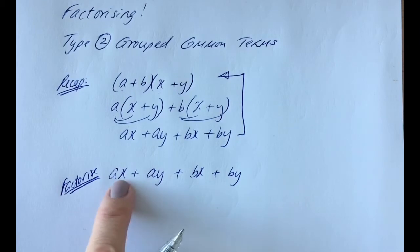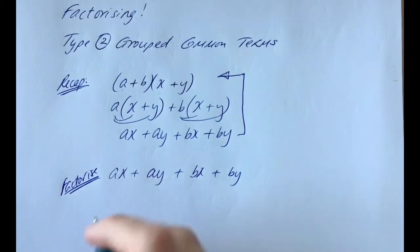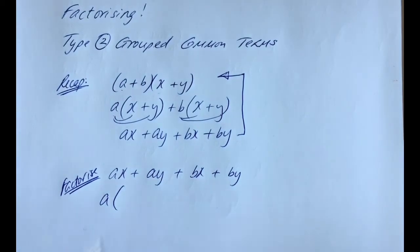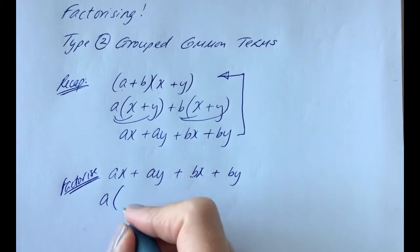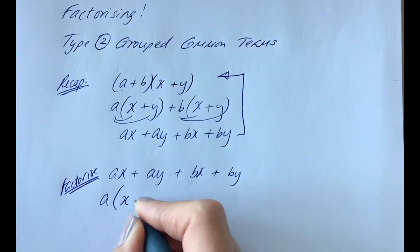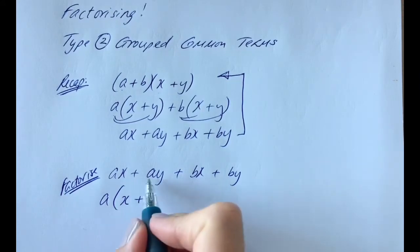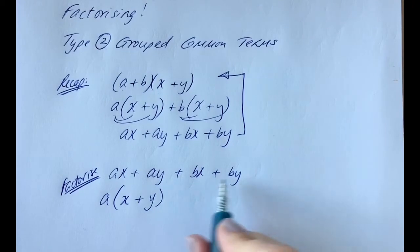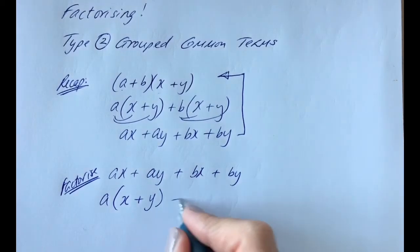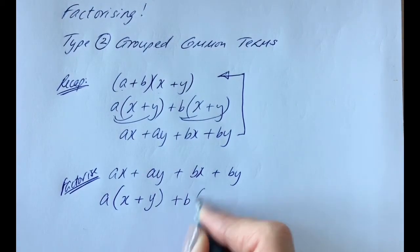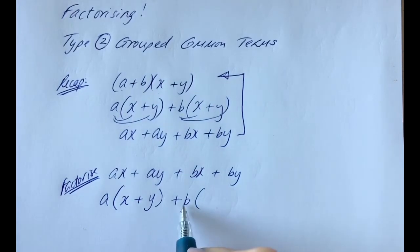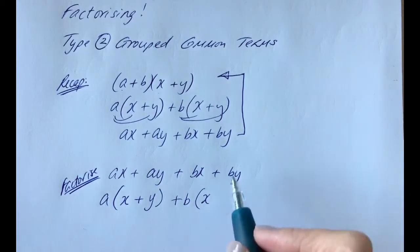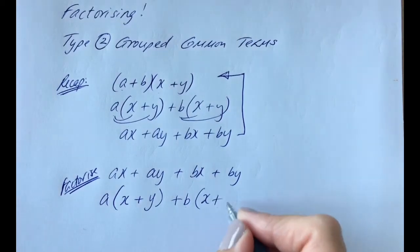Common to both ax and ay is, of course, a. So we pull out the a and open our bracket. What would you multiply a by to get ax back? You'd need an x. And what would you multiply a by to get a positive ay back? You'd need a plus y. Looking at the next two terms, what's common to both? A positive b. Open up the bracket — what would you need to multiply b by to get bx? An x. And to get by? A y.